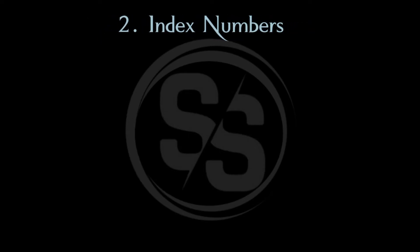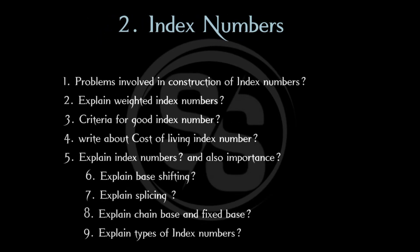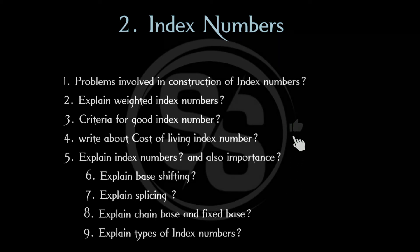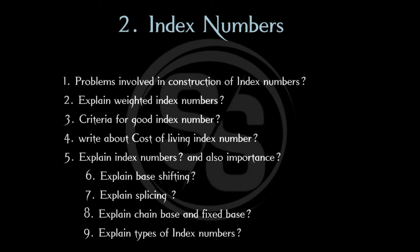Unit 2: Index Numbers. Question 1: Problems involved in construction of index numbers. Question 2: Explain weighted index number. Question 3: Criteria for a good index number. Question 4: Cost of living index number. Five-mark questions: Explain index numbers and their importance, explain base shifting, explain splicing, explain chain base and fixed base, and explain types of index numbers.